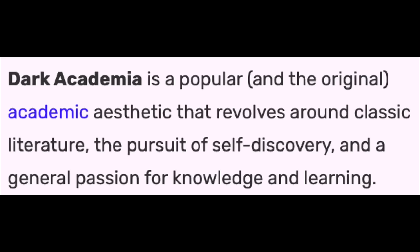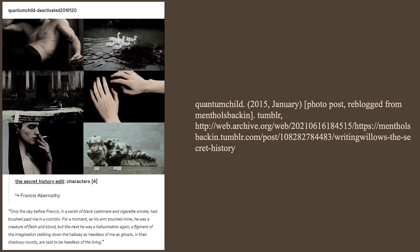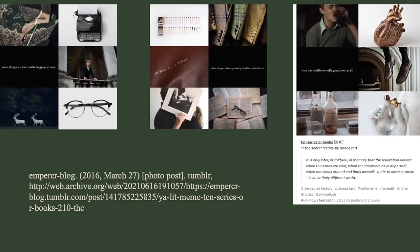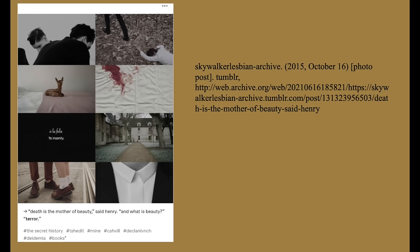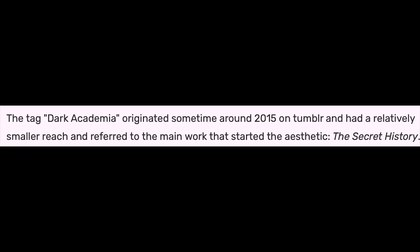First we're going to talk about where dark academia originated from and what it actually means — that's super important. If you look up the dark academia aesthetic online you'll find a definition like this: it's an academic aesthetic that revolves around classic literature, the pursuit of self-discovery, and a general passion for knowledge and learning. But if we want to be correct we need to take it back to the beginning. The tag dark academia actually originated sometime around 2015 referring to one piece of work — Donna Tartt's The Secret History.